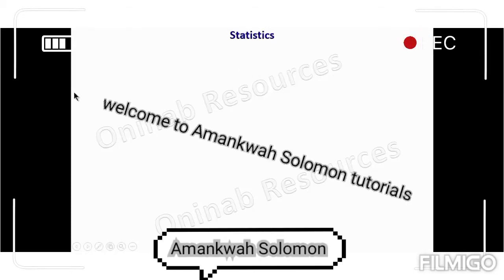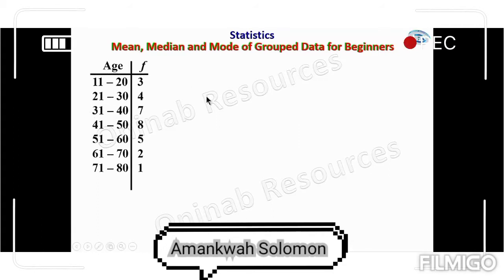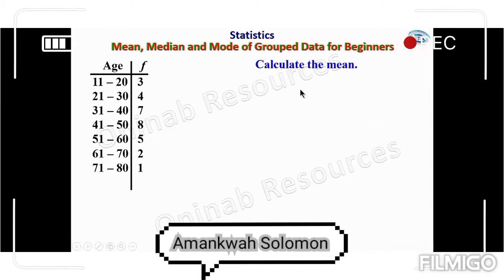In this video on statistics, we'll be looking at mean, median, and mode of grouped data for beginners. We have a table here with a range of ages and a frequency column. To calculate the mean, we have the formula: summation of fx over summation of f.